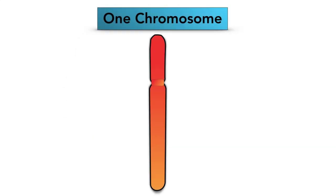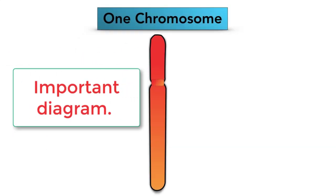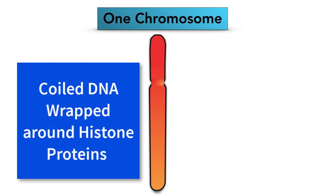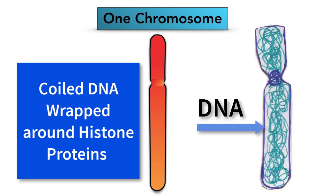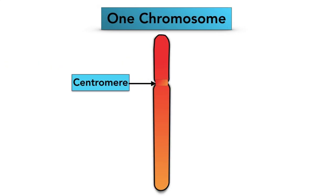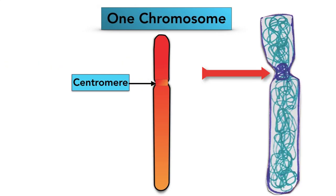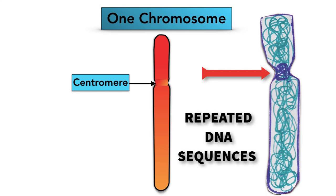Any question on mitosis requires you to know this diagram. It's one chromosome, and basically this is much coiled DNA wrapped around many histone proteins. You can see on both diagrams there is a special area — a nipped-in region known as the centromere. It's basically an area where the DNA has repeated sequences and it plays a very important role in mitosis.